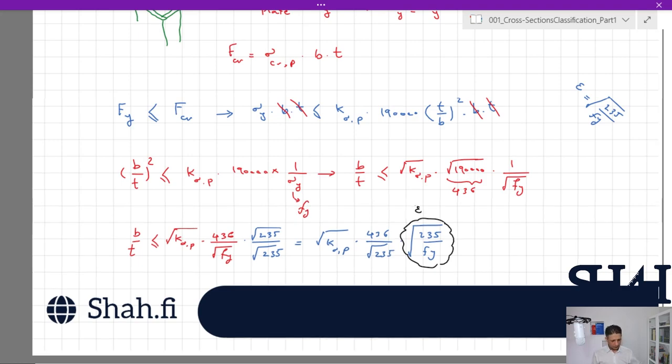We can see that according to this equation, to ensure that the cross section can behave as a plastic hinge, the ratio of the free length or the width divided by the thickness should be less than a certain value. Here epsilon is decreased by increasing the grade of the steel. It means that if you have a better material, then you might need to have a thicker plate to have the cross section able to transfer the plastic behavior.